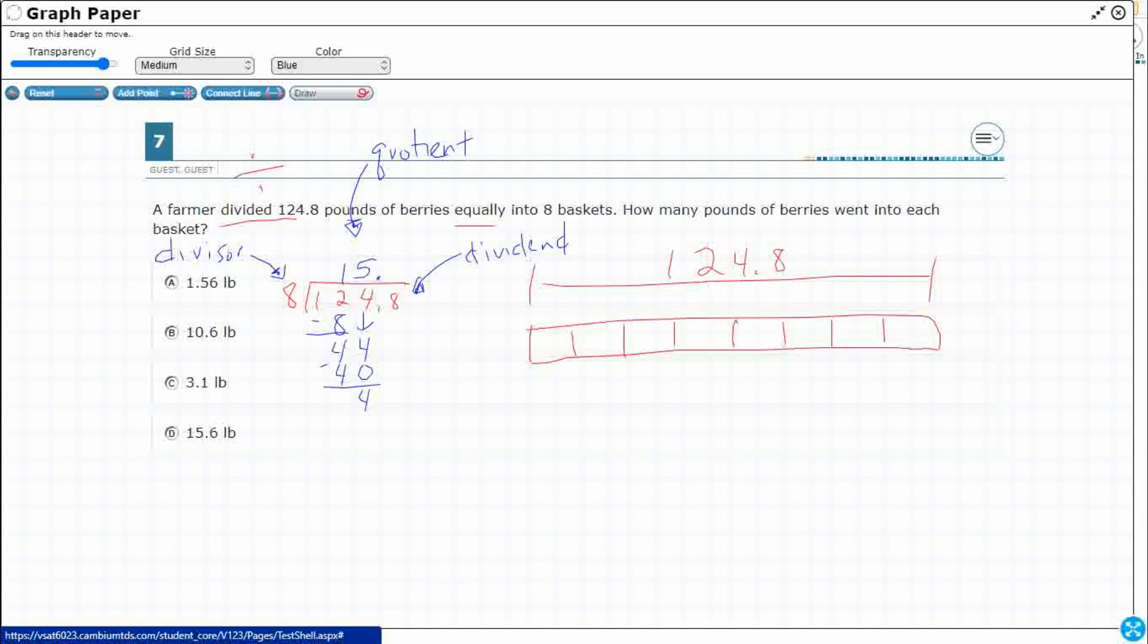Bring down our last number. Make it 48. And that's a fact that we should know. 6 times 8 is 48, so it looks like it goes in. 15.6 times or 15 and 6 tenths, which is one of our answers now.